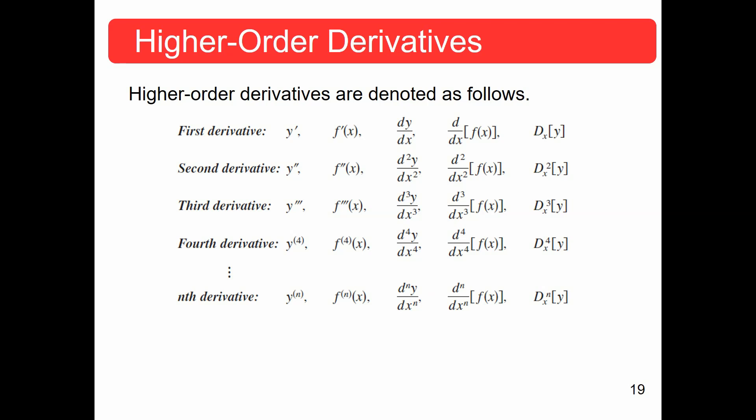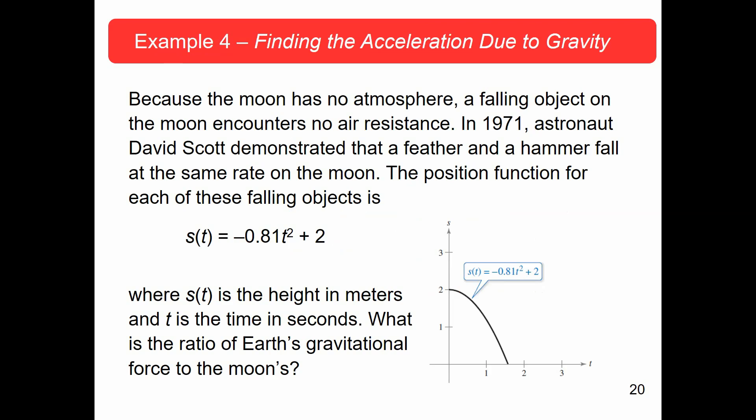So, let's look at example four. Because the moon doesn't have an atmosphere, a falling object on the moon has no air resistance. In 1971, astronaut David Scott demonstrated that when you drop a feather and a hammer at the same time, they're going to fall at the same rate on the moon. This is because of negligible air resistance. On Earth, if you drop a feather and you drop a hammer, they're going to fall at a different rate because the feather is going to kind of glide down because it has so much surface area and so little mass that the air resistance really keeps it from going straight down.